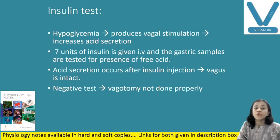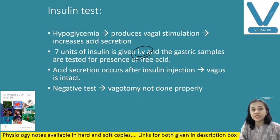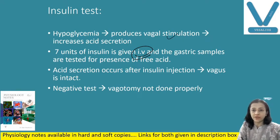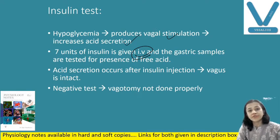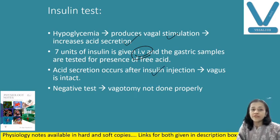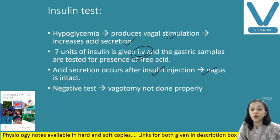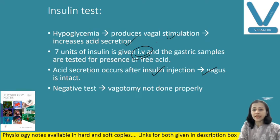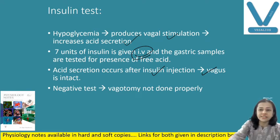Then the insulin test. Here we are injecting 7 units of insulin intravenously. When insulin is given, there is hypoglycemia, and when hypoglycemia is there it stimulates the vagus nerve, and as vagus is stimulated, acid secretion increases. So here we are stimulating the vagus nerve and it increases acid secretion. Acid secretion occurs after insulin only if your vagus nerve is intact. So if there is vagotomy, you can do this test to check whether vagotomy was performed properly or not. Because after vagotomy, if you are injecting insulin, it should not stimulate gastric secretion. And if vagotomy is not done properly, this test is negative.